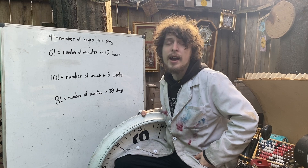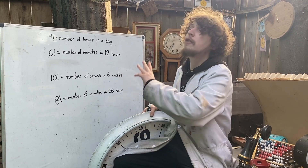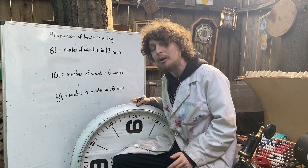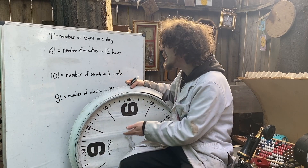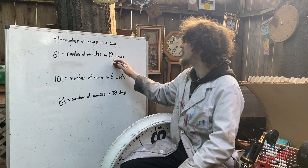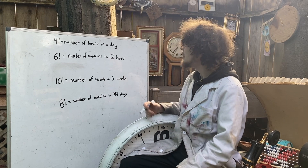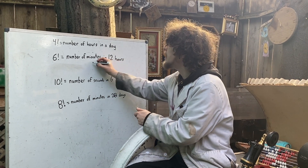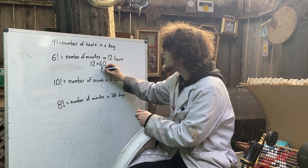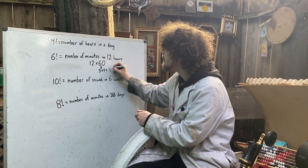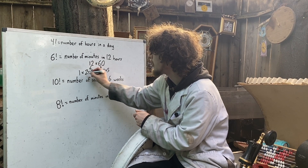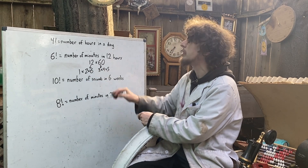Humans divide up time in pretty divisible ways, so factorials show up all over our time systems. Four factorial is 24 — the exact number of hours in a day. And six factorial is the exact number of minutes in 12 hours. Since each hour is 60 minutes, we're looking at 12 times 60. Breaking those down: 60 is 3 times 4 times 5, and 12 is 2 times 6 — times 1 if we want — and that's six factorial in disguise.